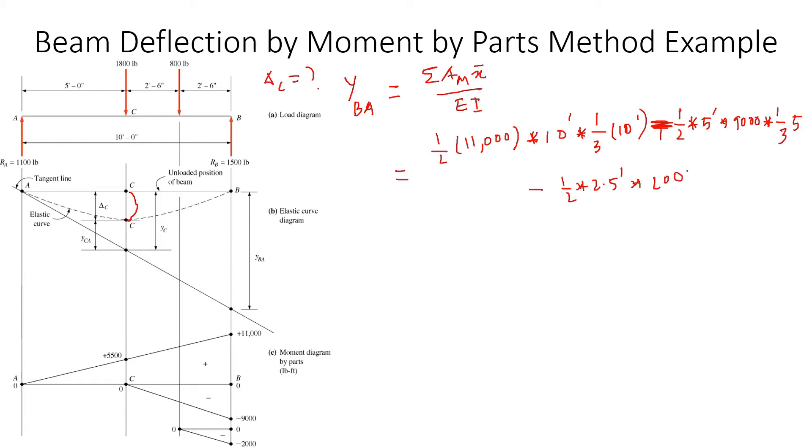Minus the smallest triangle: half times base which is 2.5 feet times the height 2,000 pound-feet, then times one-third of 2.5. The x is from the right side, divided by EI.